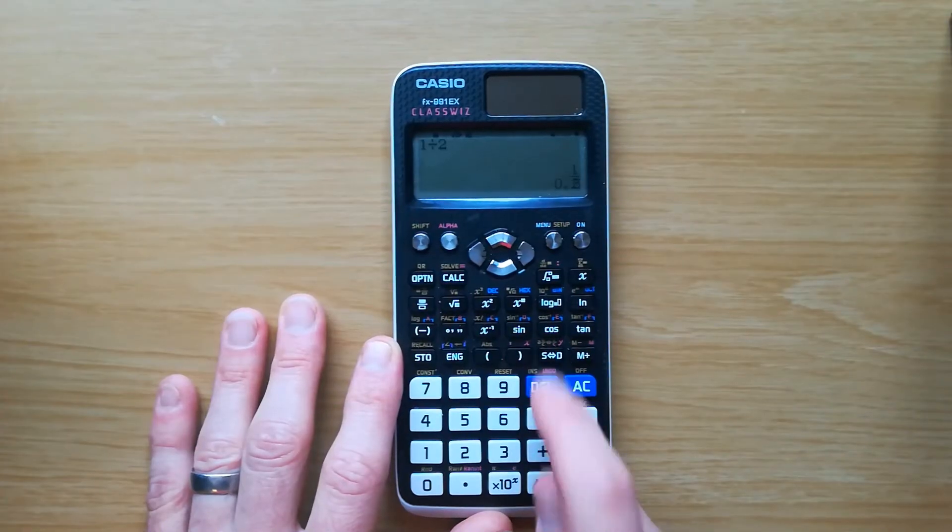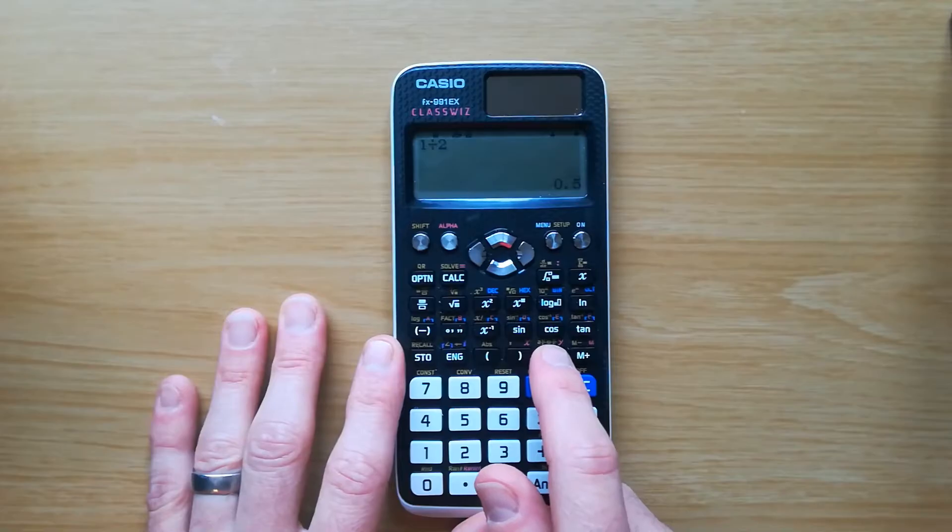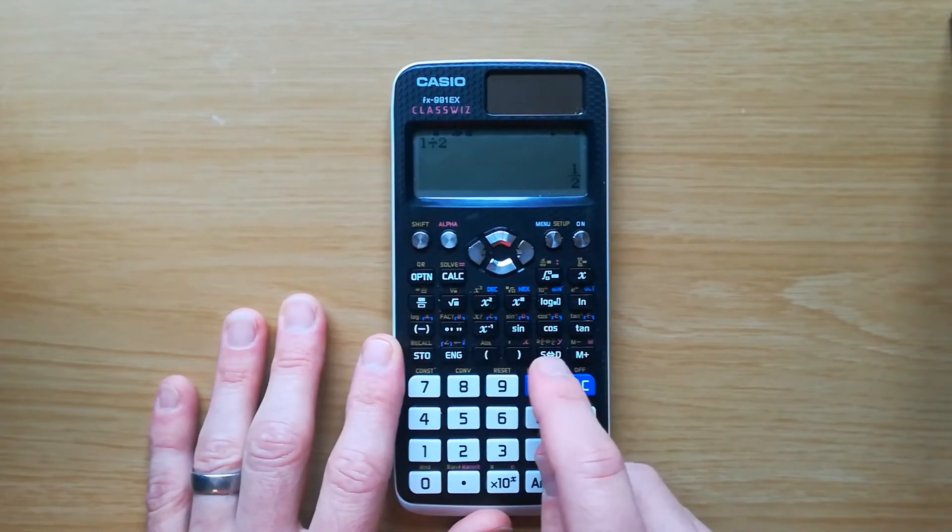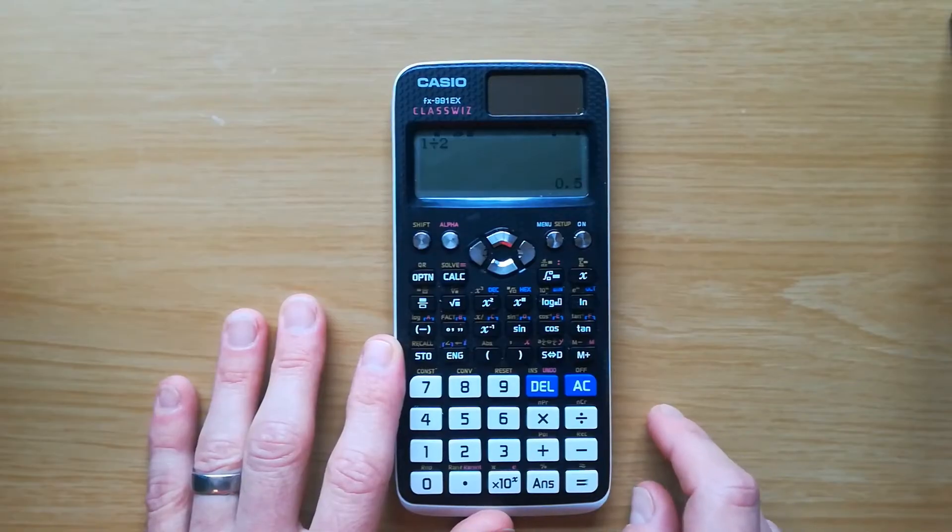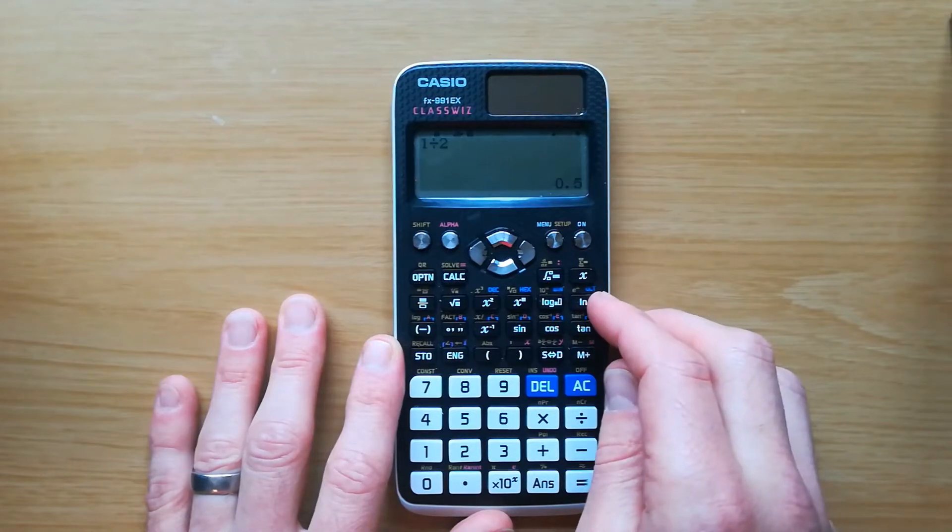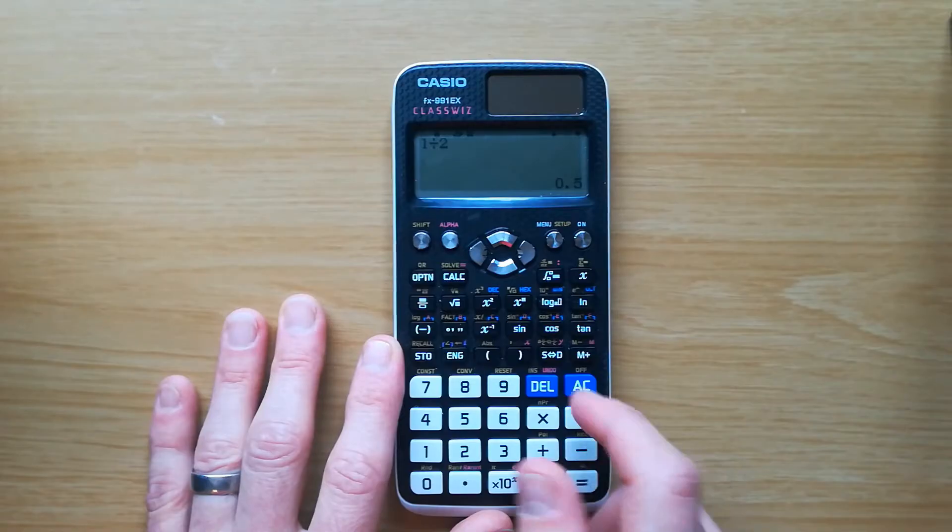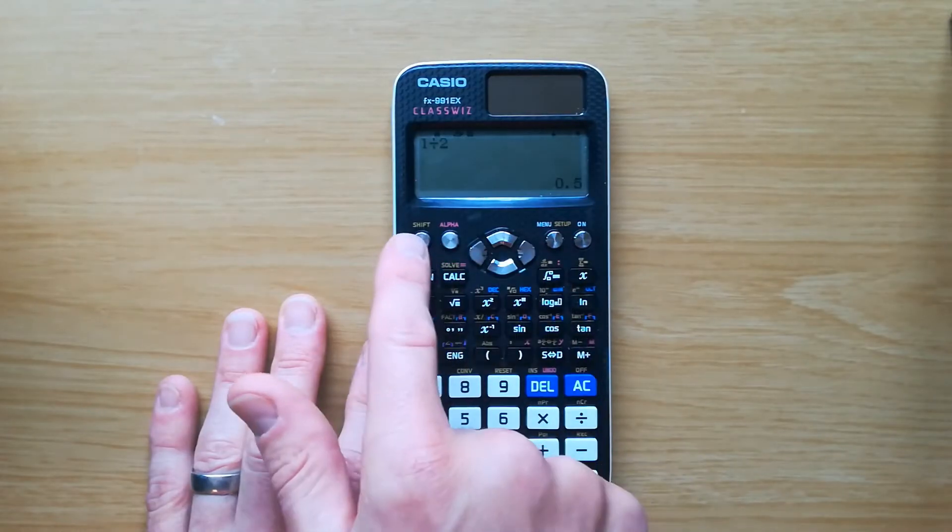There you go, so solved. Okay, but you might want it to default to decimals, so instead of having to press the SD button every time it'll just show up as a decimal. And if you want to do that, you need to use your setup menu.